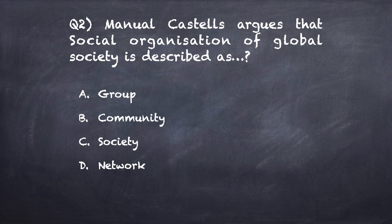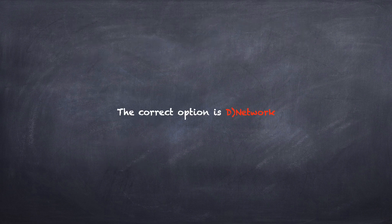Question number two: Manuel Castells argues that the social organization of global society is described as? Option A: group. Option B: community. Option C: society. Option D: network. The correct option for question number two is Option D, network.